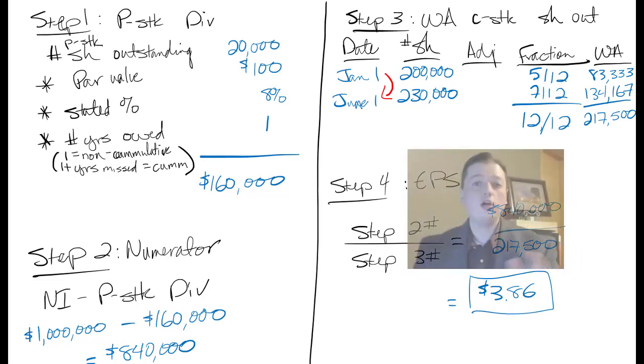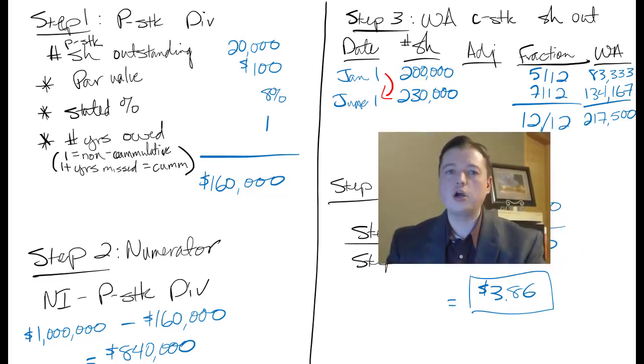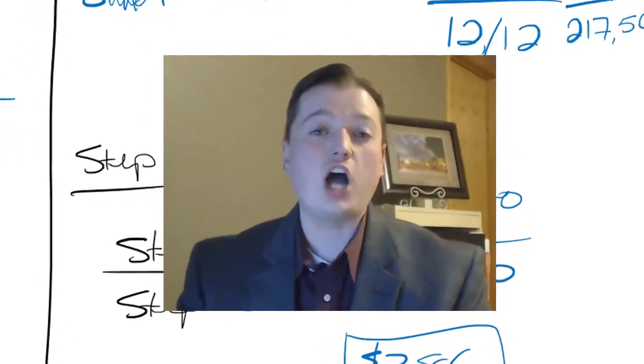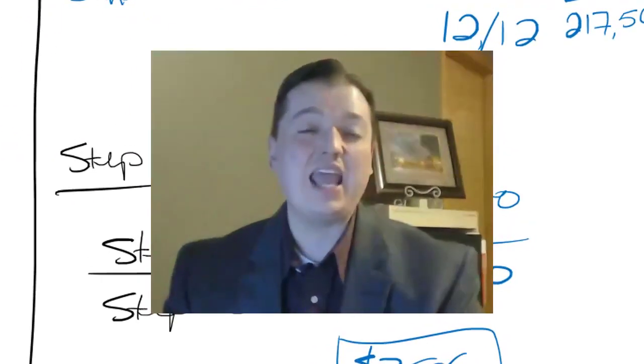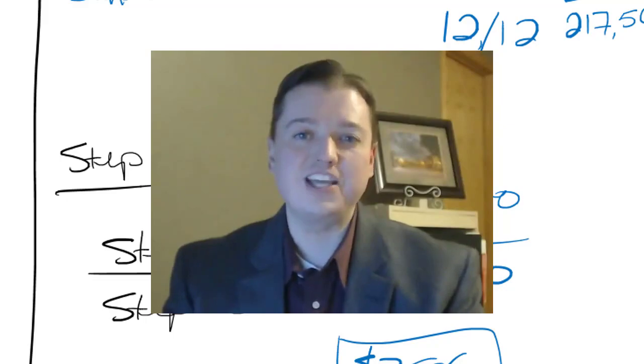Our last segment went a little long. So this one we're going to keep a little bit shorter. We finished basic earnings per share, but we can't stop there. Remember, FASB requires that we report both basic and diluted EPS. So when we come back, we'll be talking about how we add in and account for diluted earnings per share. We'll see you then. Thanks.